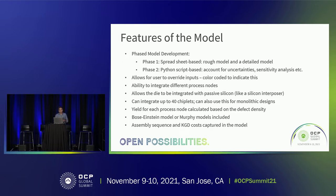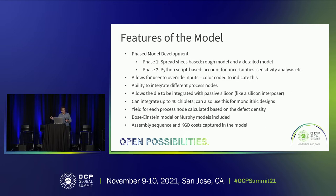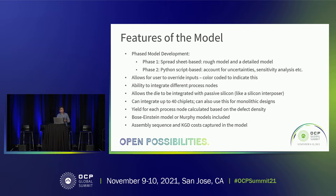One challenge with models is you can make them perfectly accurate but unusable, or usable but oversimplified. To strike that balance, we've broken the work into two phases. Phase one is a spreadsheet-based model anyone can use. Phase two is a more sophisticated Python-based model allowing more advanced analysis — uncertainty analysis, sensitivity analysis — which you can't do in a classical spreadsheet. The model lets users override inputs, so you can use the calculations or enter your own values.